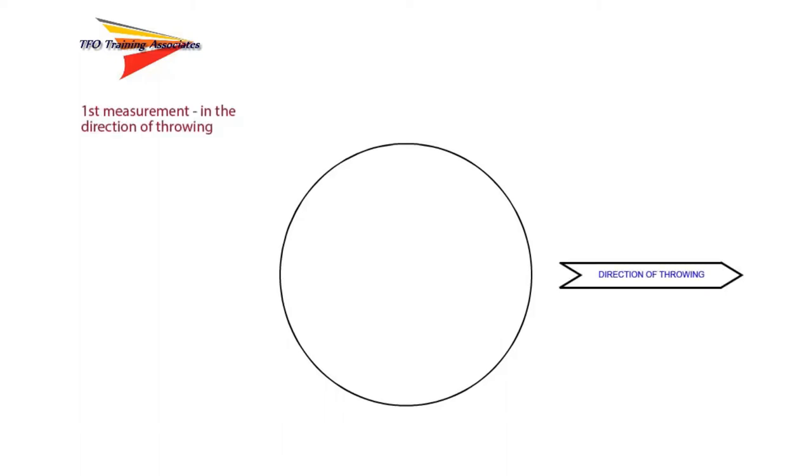First, measure the diameter of the circle in the direction of throwing. In the shot put, hammer throw, and weight throw events, the diameter would be 2.135 meters, or 7 feet 0 inches. In the discus event, the diameter should be 2.50 meters, or 8 feet 2.5 inches. Mark the midpoint of this line, either 1.0675 or 1.25 meters, respectively.